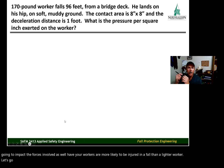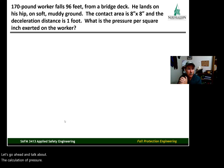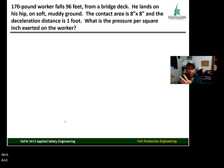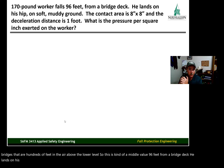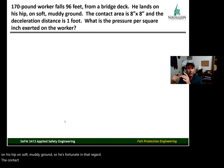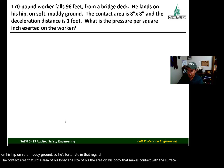Let's go ahead and talk about the calculation of pressure. Here's our sample problem: we have a 170-pound worker who falls 96 feet from a bridge deck — that's about middle of the road for bridge construction. He lands on his hip on soft, muddy ground, so he's fortunate in that regard. The contact area — the area on his body that makes contact with the surface — is eight inches by eight inches.